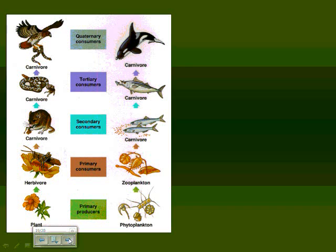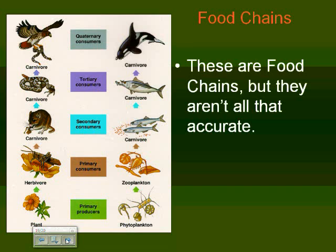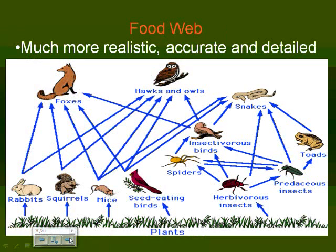This is just demonstrating two different types of food chains — one for land and one for the ocean. The reason they're not that accurate is that this is a more accurate representation: food webs. It's messy, it's confusing, but everything doesn't only have one food source. Organisms eat many different things depending on what's in their environment, so the food web is a more accurate representation.